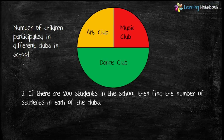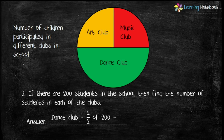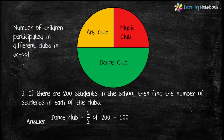Next question: if there are 200 students in the school, find the number of students in each club. Let's first find the number of students for the dance club. The dance club is represented by half of the circle and the total number of students is 200, so number of students in dance club = 1/2 of 200 = 100.